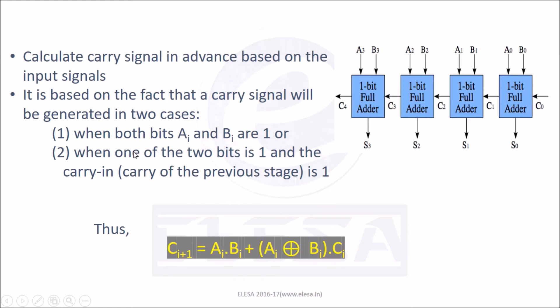The first case is satisfied by the term Ai·Bi — it will produce output 1 only when both inputs Ai and Bi are 1. The second case is satisfied by the term (Ai XOR Bi)·Ci — it will produce output 1 only when one of the two bits Ai or Bi is 1, and the carry-in, that is the carry of previous stage Ci, is 1.